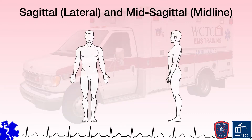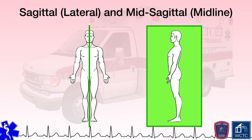For the next plane, we will split the body vertically again, but this time, rather than splitting the body between front and back, the plane will divide the body between left and right. This sagittal, or lateral, plane does not necessarily need to split the body evenly from left to right — it can be offset to one side or the other. If this imaginary line or plane, referred to as the sagittal axis, does indeed split the patient evenly into left and right halves, running down the center of the nose and navel, the plane is referred to as mid-sagittal, or the midline.